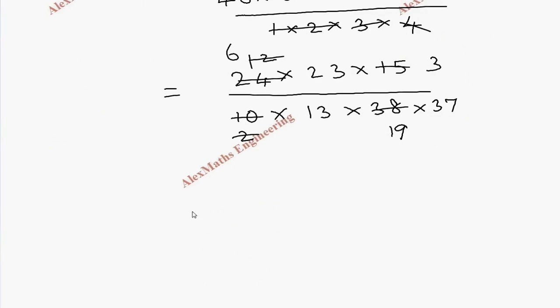So let's write the remaining numbers: 6 into 23 into 3, whole divided by 13 into 19 into 37. So the product of the numerator is 414 and the denominator is 9139.